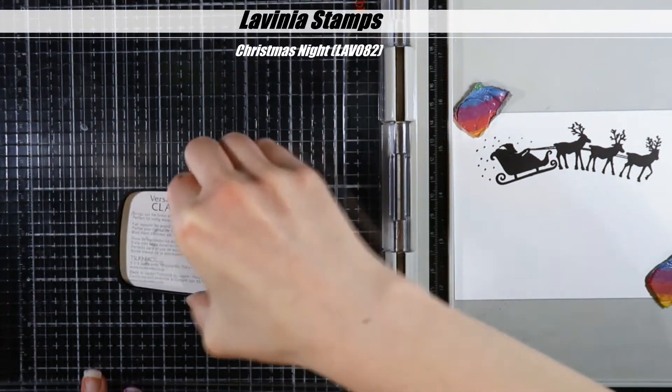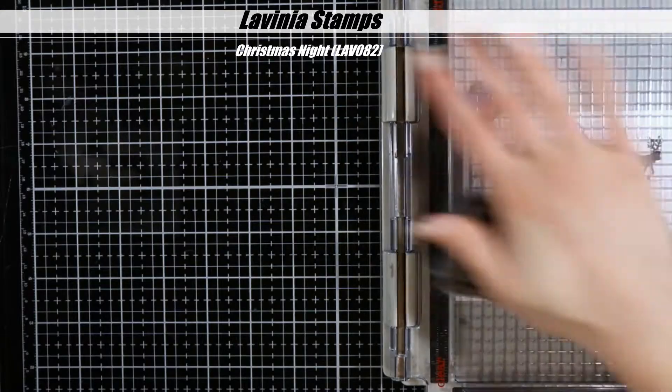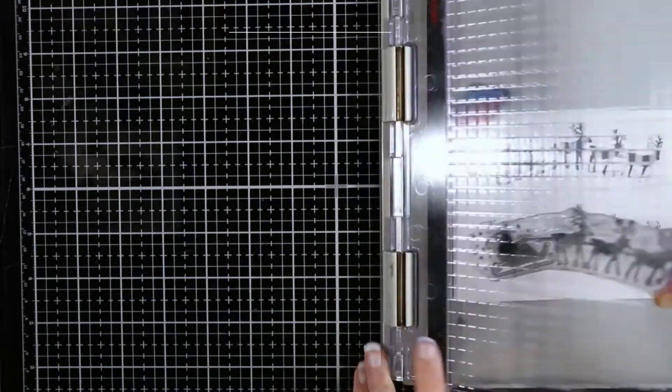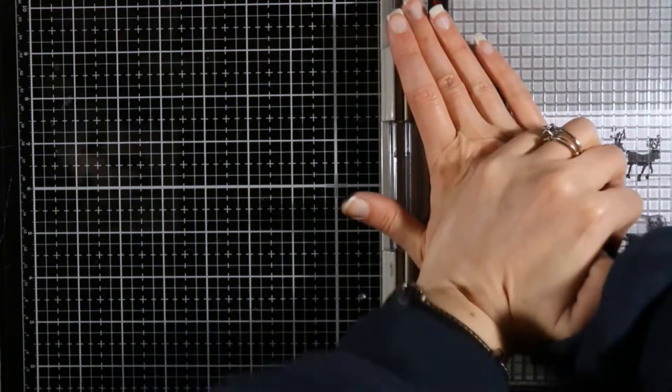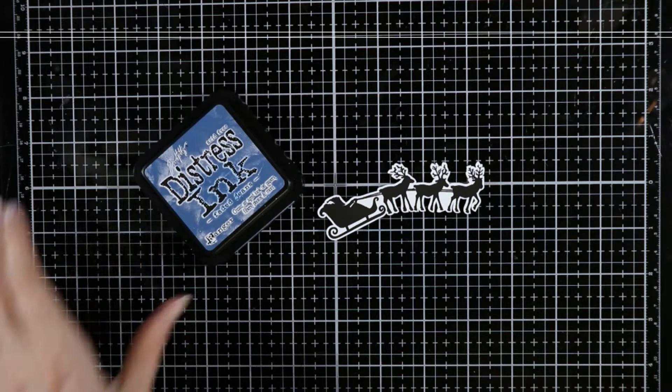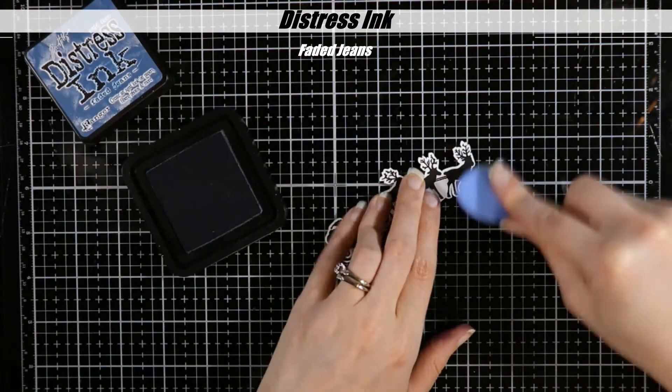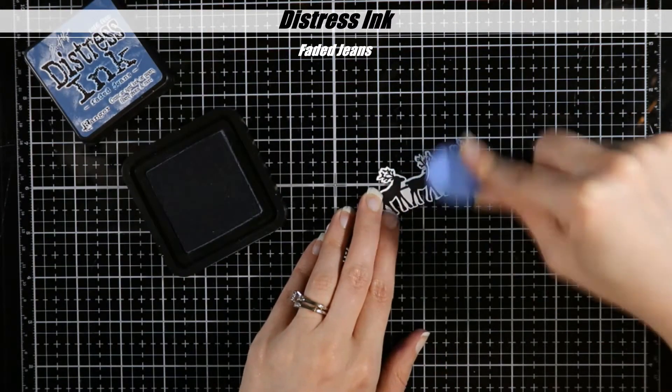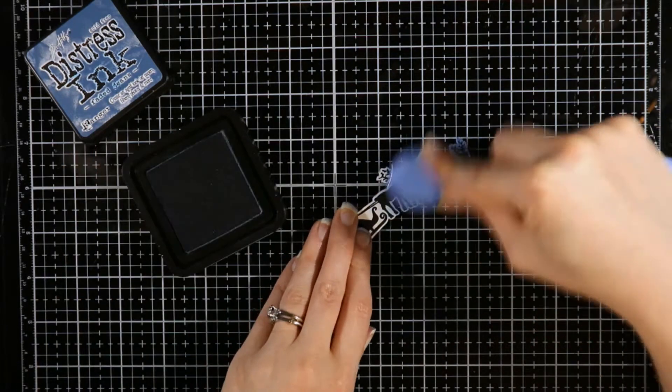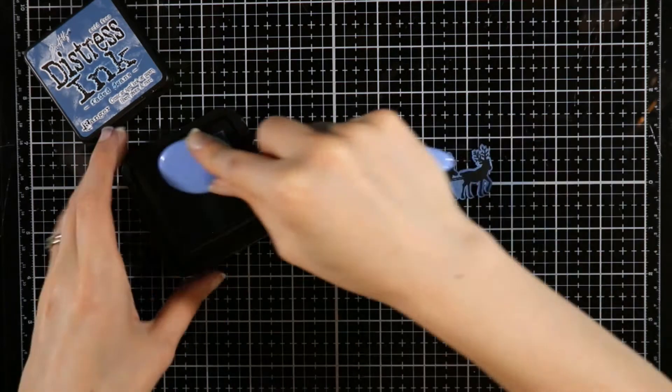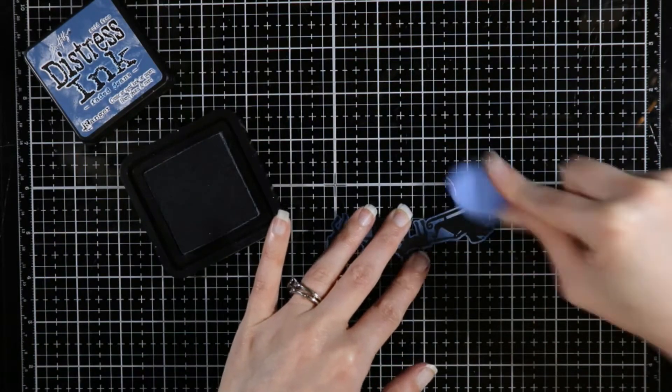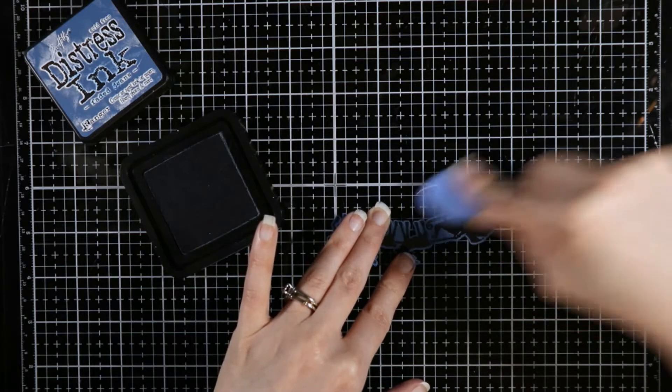I'm only going to show you these steps for one card because I did the cards exactly the same. I'm going to stamp this Christmas night stamp out, which is Santa and his reindeer, and then I cut it out with my scanning cut. Now I'm going to ink blend faded jeans on the background here. In my last video when I did this, I embossed first and then ink blended the background because I didn't like the white—it was too stark. I got a perfect embossing on that one.